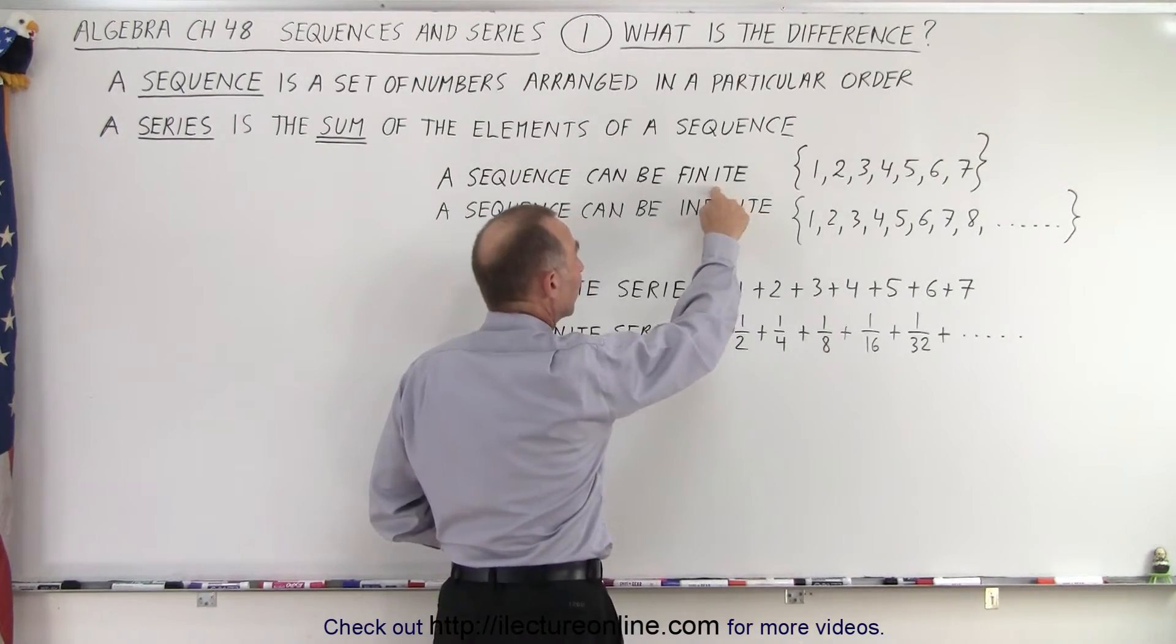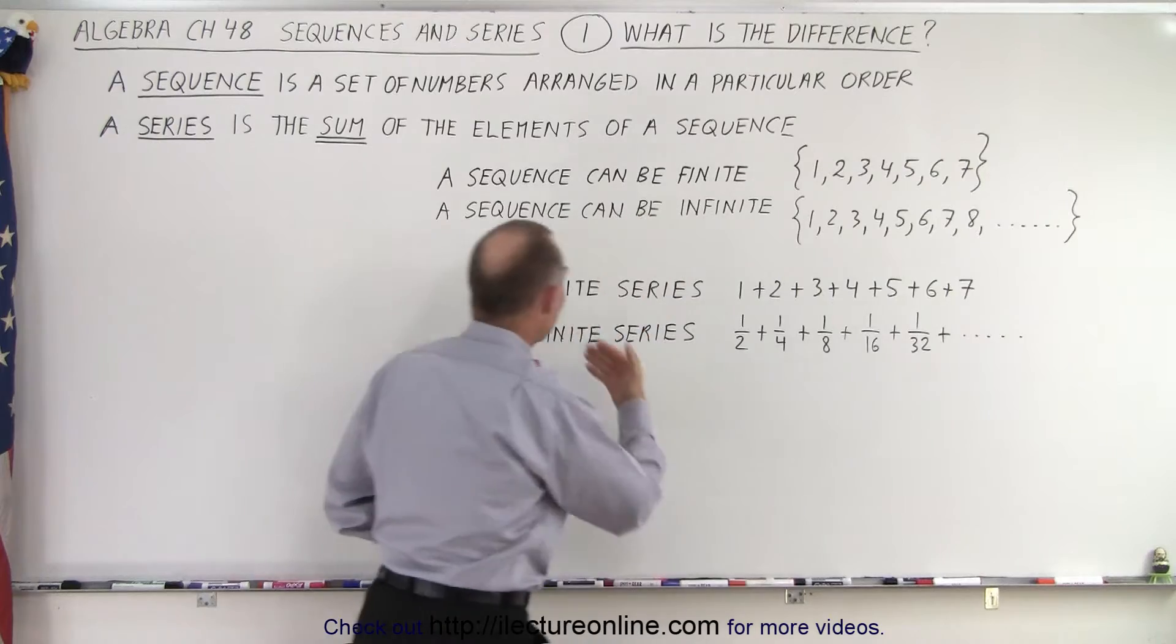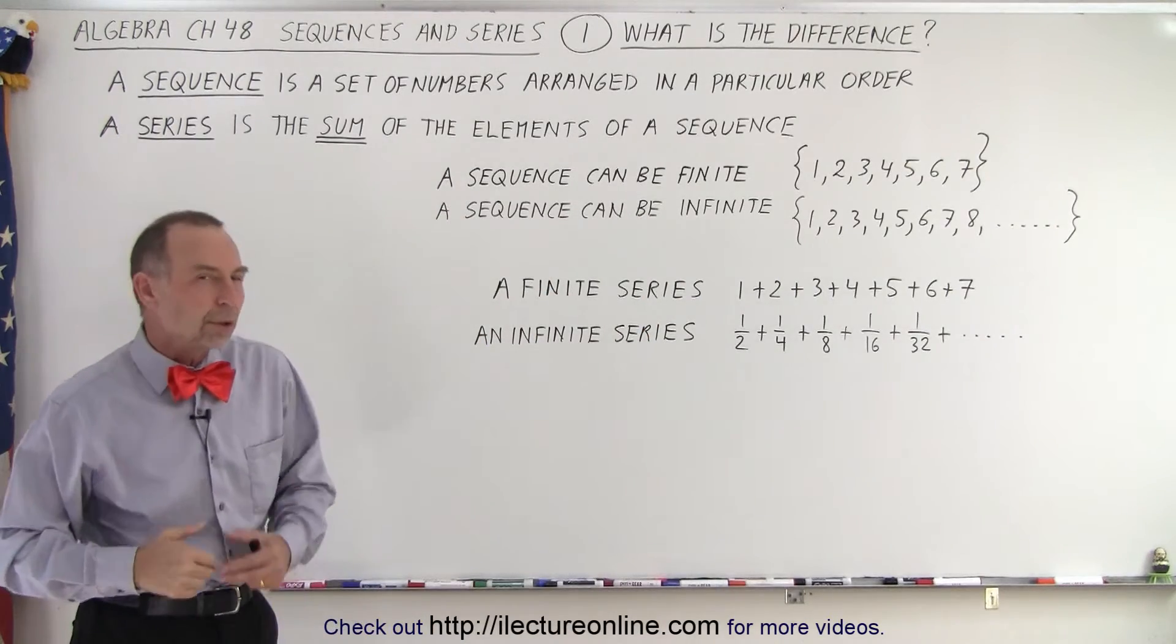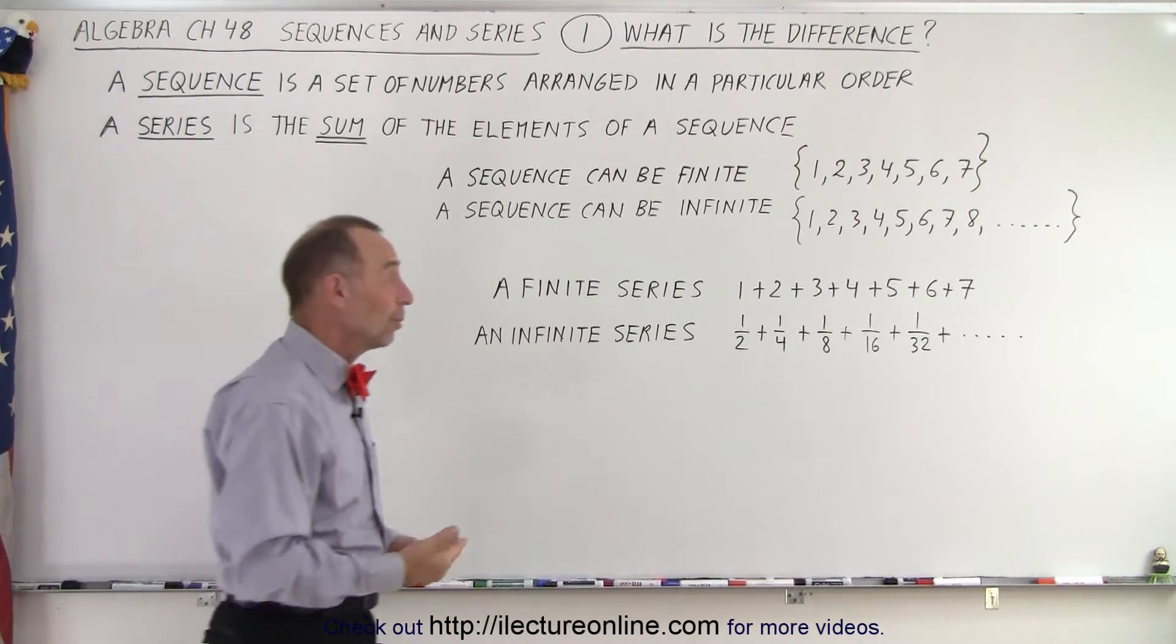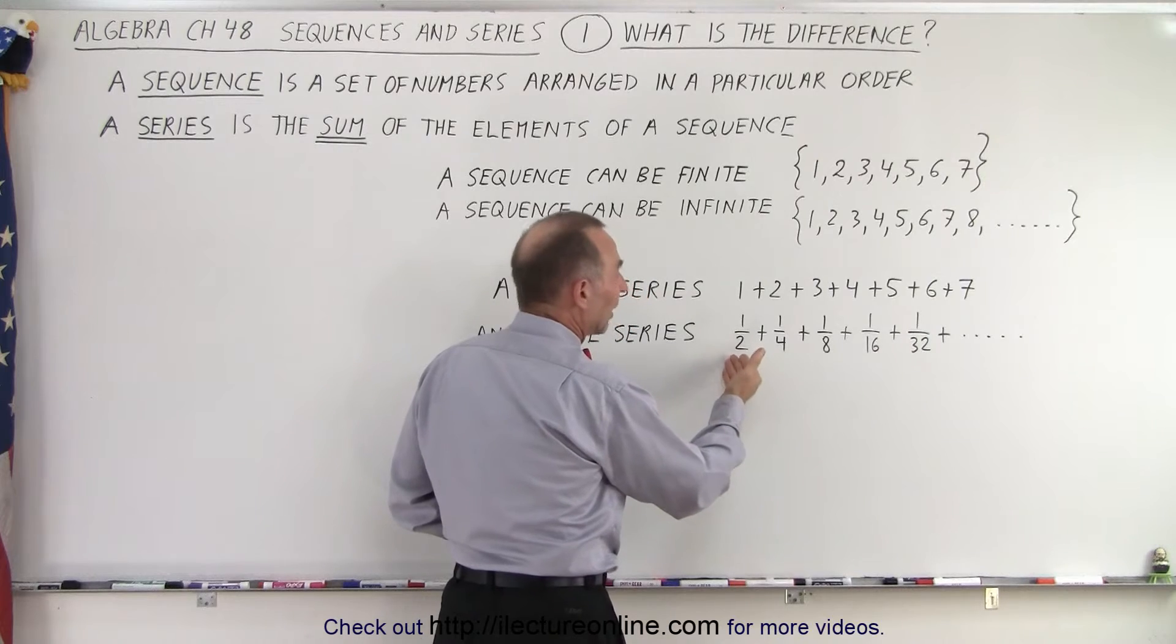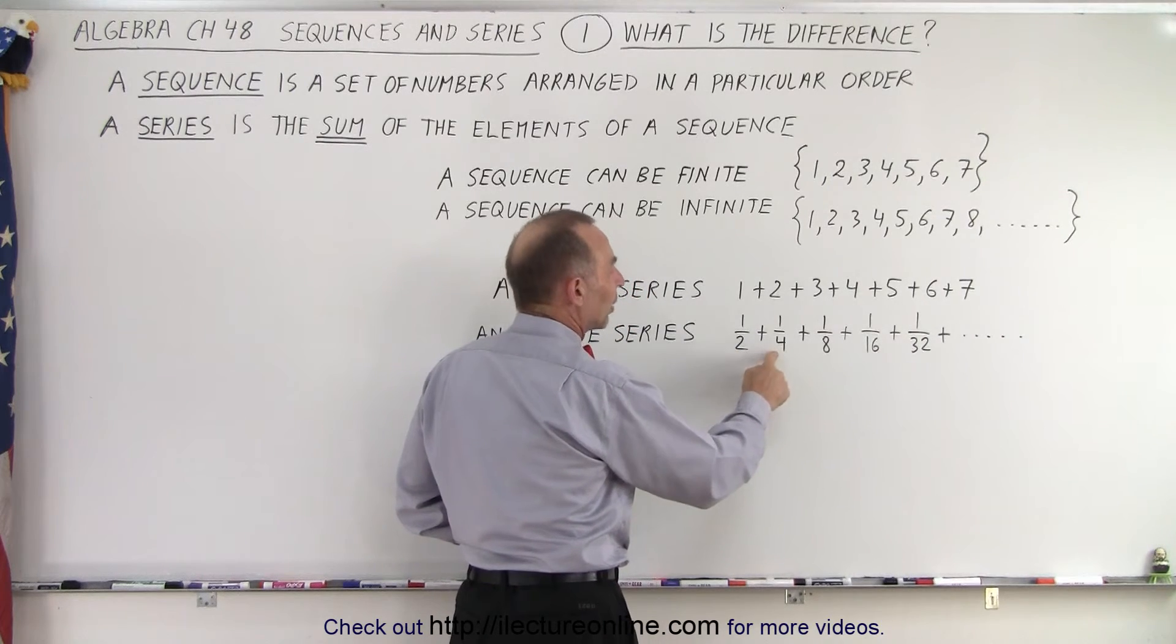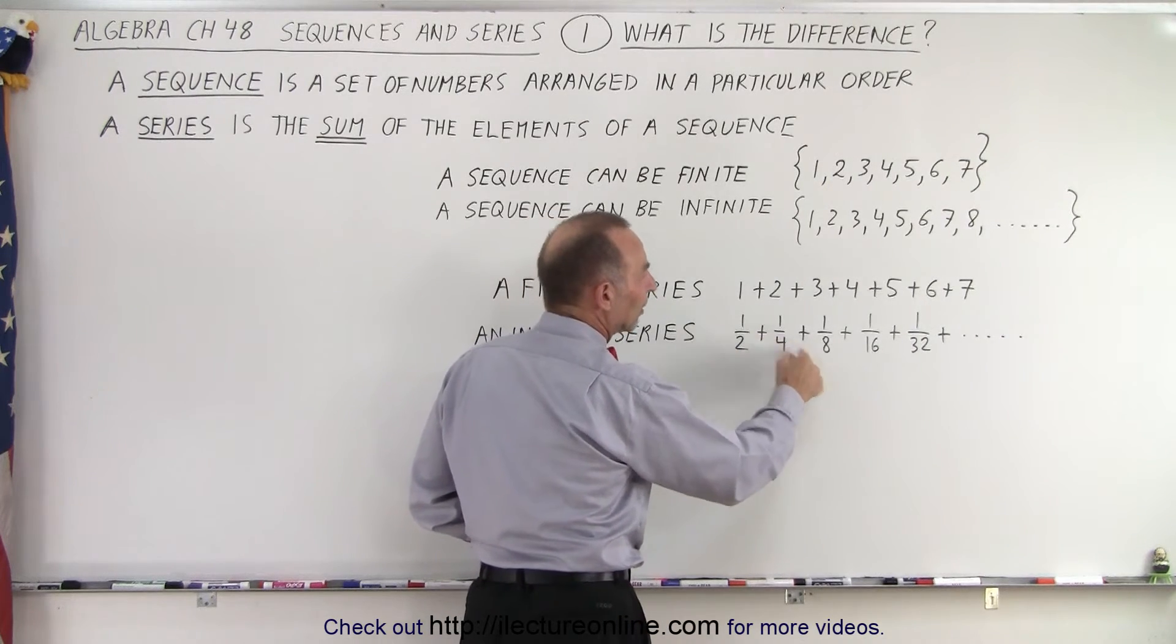And if we then add those numbers together, for example, if we take a finite sequence and we add the numbers together, we have a finite series. We could also have an infinite series, when we start with number one-half, then we multiply times two, we get a quarter, we multiply times two, we get an eighth, and so forth.